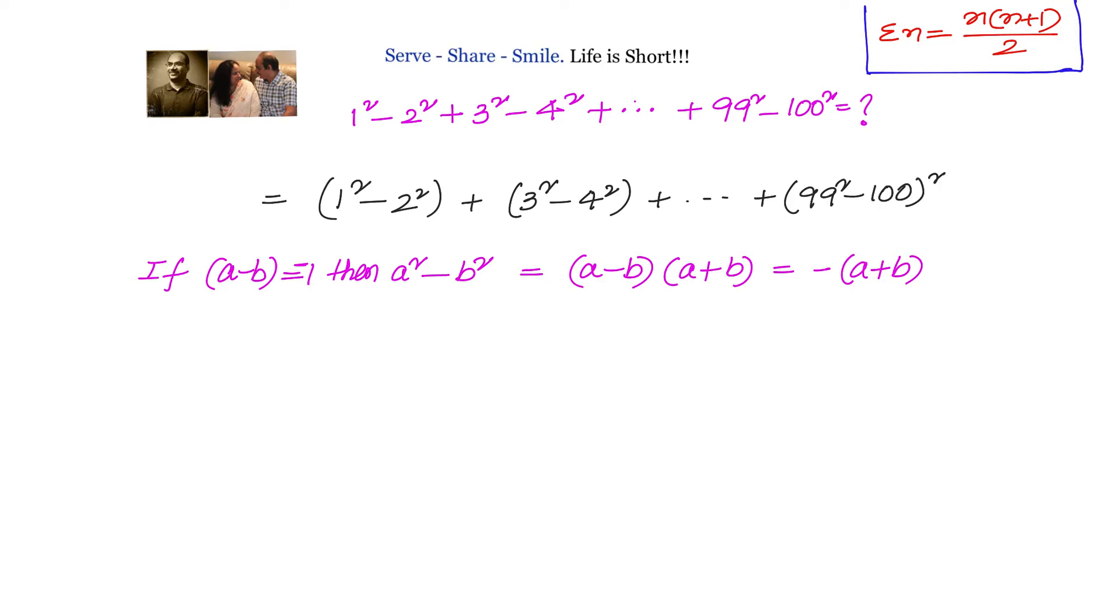So what will be 1 square minus 2 square? Then 1 square minus 2 square is equal to minus of 1 plus 2. Similarly, 3 square minus 4 square equals minus of 3 plus 4. Now taking these values and substituting in what we want, we will have